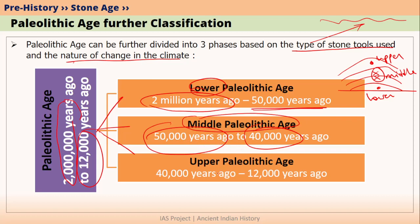The last and newest part of Paleolithic Age was Upper Paleolithic Age, which started somewhere around 40,000 years ago and ended at 12,000 years ago. Just like Mesolithic Age was seen as a transitional period between Paleolithic Age and Neolithic Age, we can consider Middle Paleolithic Age as a transitional phase between Lower Paleolithic Age and Upper Paleolithic Age.